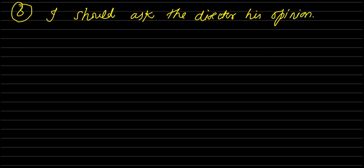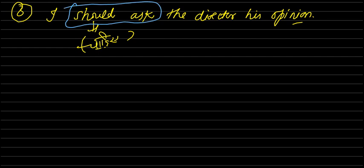'Are not allowed' is the predicate. Third example: 'I should ask the director his opinion.' Here 'should ask' is the verb phrase used as the predicate.